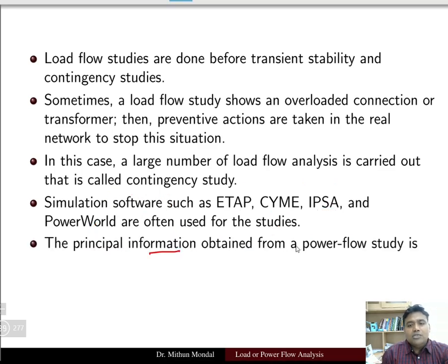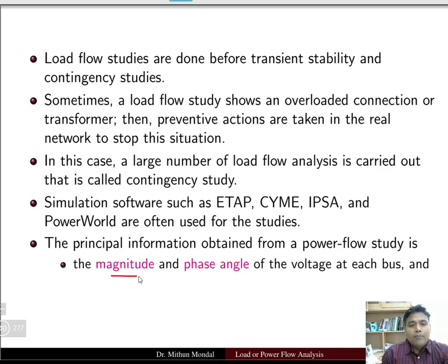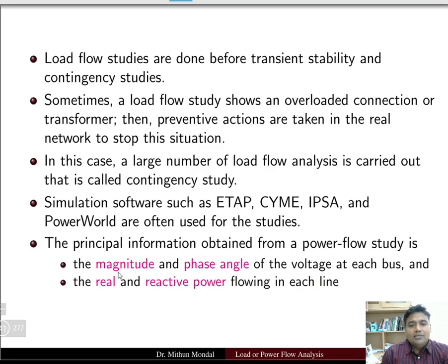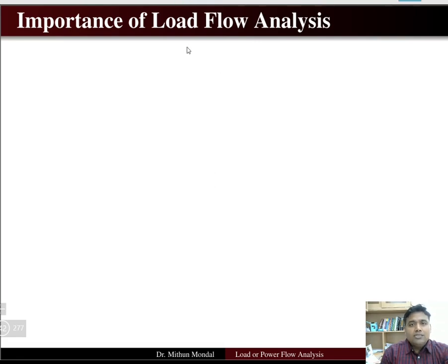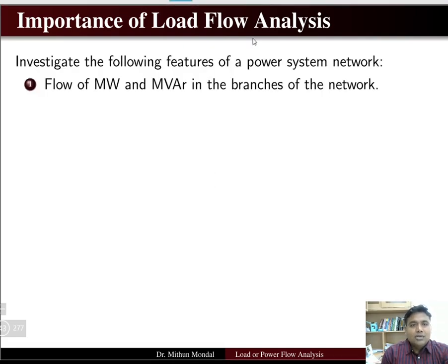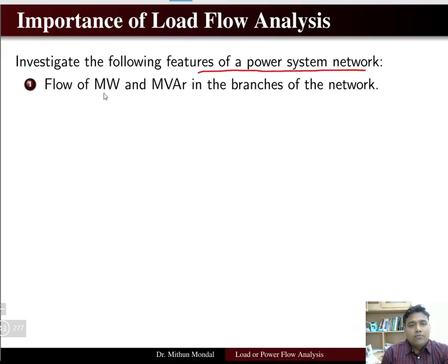The principal information obtained from the power flow study includes: the magnitude and phase angle of the voltage at each bus, and the real and reactive power flowing in each line. These two pieces of information are the principal results we obtain from a power flow study.